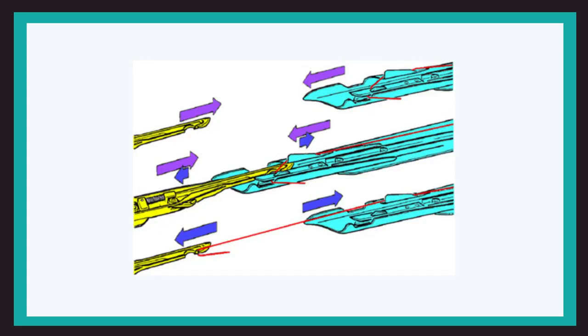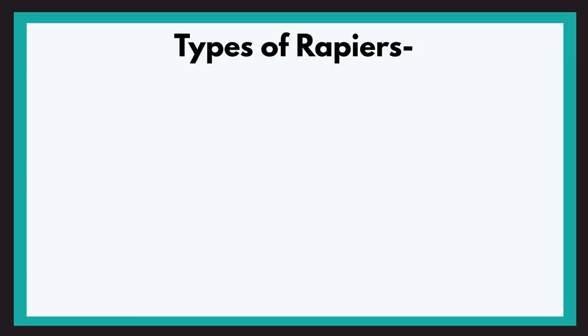Okay, so now you have got a basic idea that there is a thing called rapier loom which has rapier heads and which transfer the yarn. Now before we begin and see the mechanism and have a look at exactly what's happening, let's go through the types of rapiers so it will be easy for us to understand.